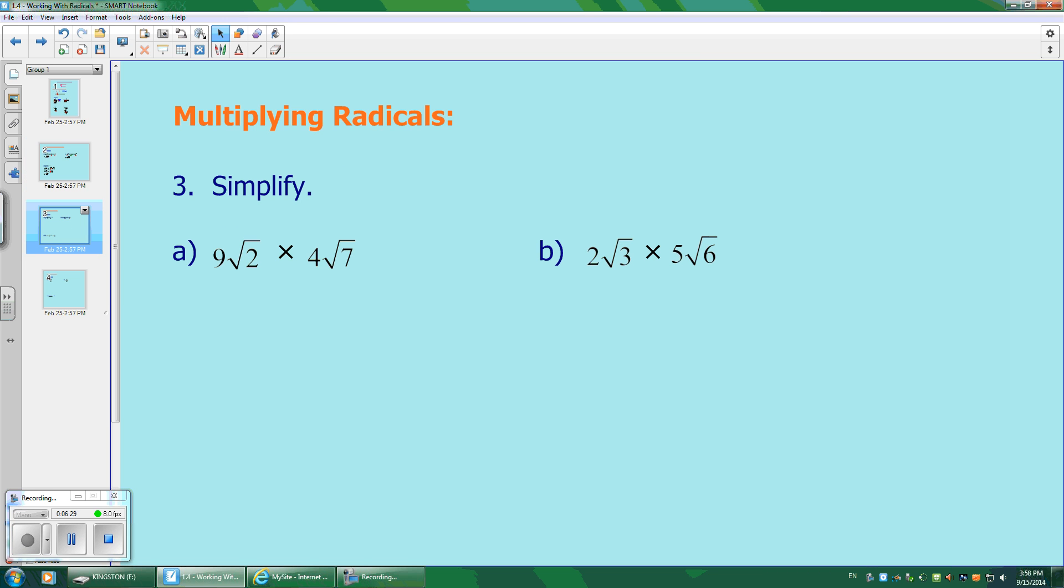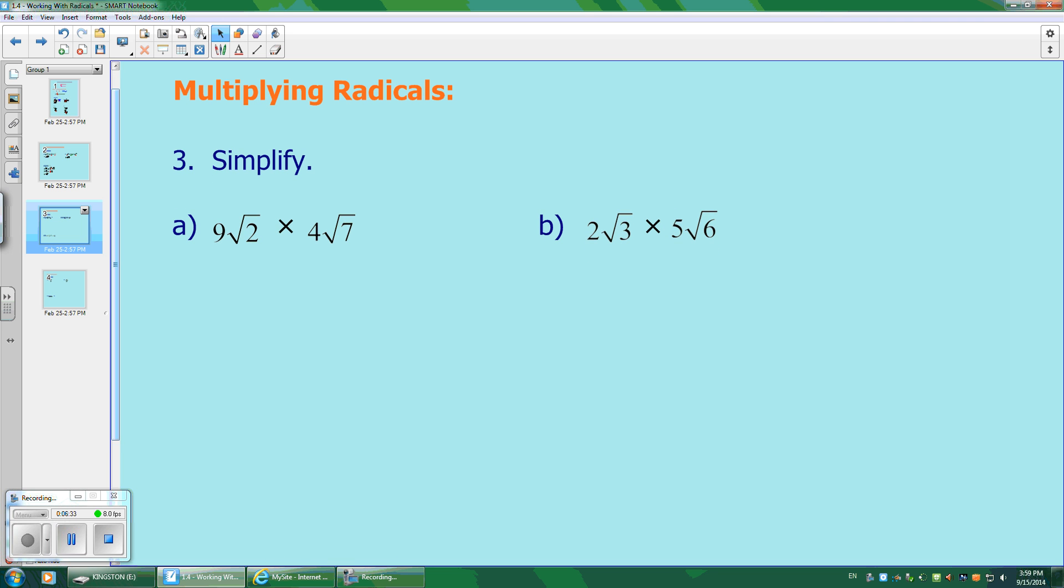Now the next one's going to be multiplying radicals. I always get mixed up, radicals and rationals. In order to multiply, what you're going to do is multiply whole numbers with whole numbers. 9 times 4 gives you 36. And then you're going to multiply roots with roots. So that would be root 14. What you don't want to do is go, 4 times 7 gives you root 28. That's incorrect. They're already technically multiplying each other, but the numbers don't really interact with each other. They're separate. And this is the final answer. I don't think there's a perfect square in 14, so we're just going to continue. That's the final answer.